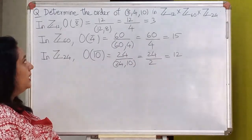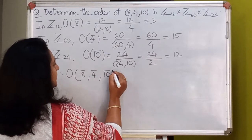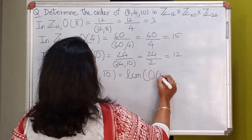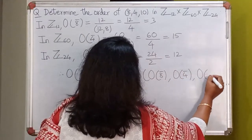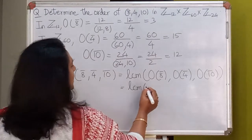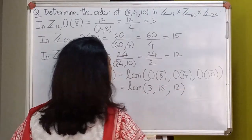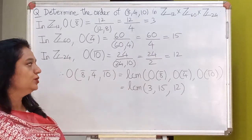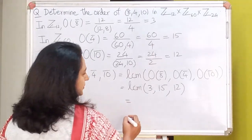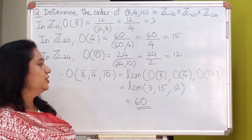Now I know the orders of the individual elements. Therefore I use the formula from the last lecture. The order of this triple will be the LCM of the order of 8, order of 4, and order of 10 in their respective groups. We have just shown that the order of 8-bar in the first group is 3, the order of the second element is 15, and the order of the third element is 12. So all we need is LCM(3, 15, 12), which is 60. So the order of this element in the given group is 60.